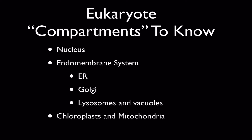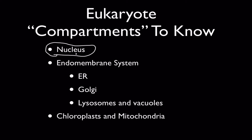My name is Ed Chapman, and this videocast is going to cover the most important compartment in eukaryote cells, the nucleus. We're going to focus on the structure and function of the nucleus, which is the trademark or classic organelle found in eukaryote cells that makes them different and more complex than prokaryote cells.